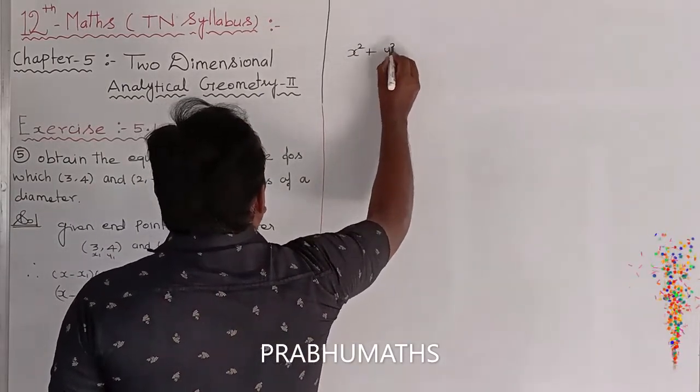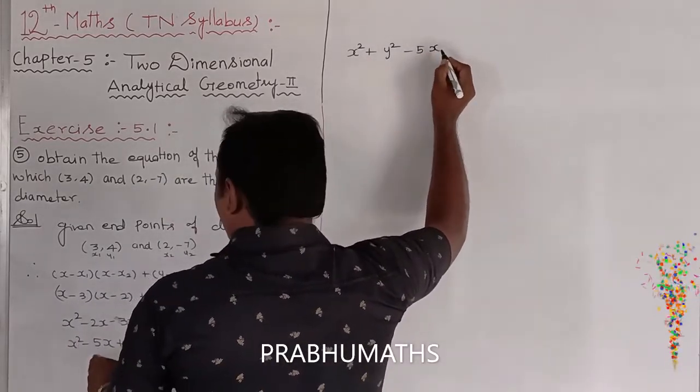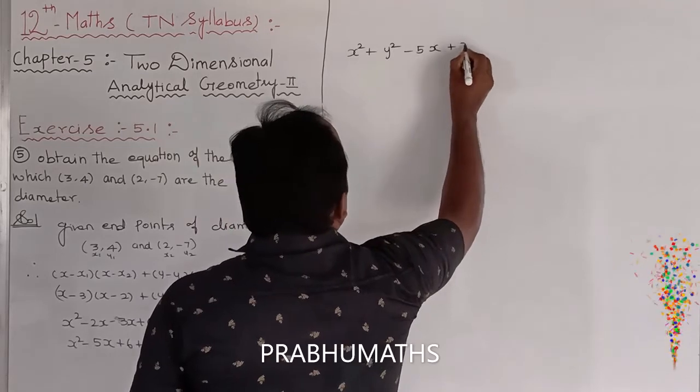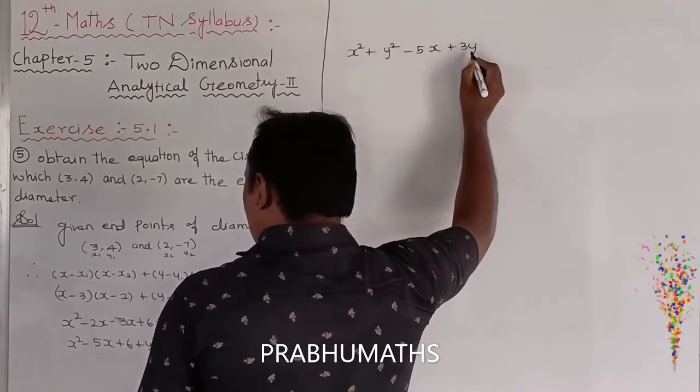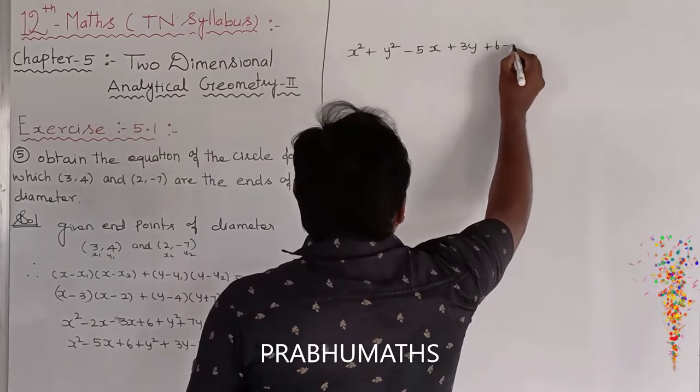So therefore, x square plus y square minus 5x plus 3y minus 28 equals 0.